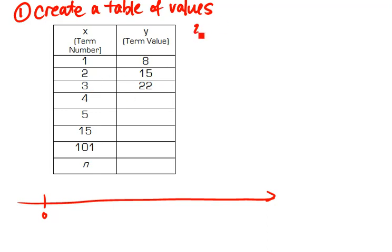The second step after you've created the table of values is look for the down rule, which basically means how much does it go up or down by every term number. So if I look at this and I go from 8 to 15, 15 to 22...